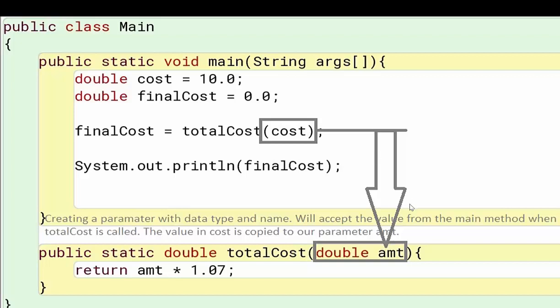It will accept the value from the main method when totalCost is called. Here we can see totalCost is being called. The value inside of cost is being copied to our parameter, amt, which is why I do not need to assign it a value. Whatever cost is, which in this case is 10.0, that is going to be copied down to amt. Notice my data type of amt matches the data type of what is being copied. So cost is a double. I want to make sure that matches the data type of the parameter that's going to accept the copy of cost.